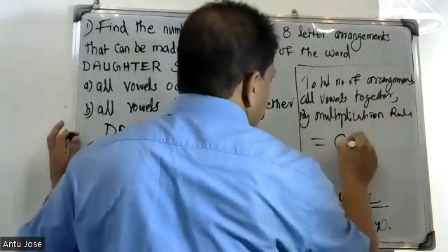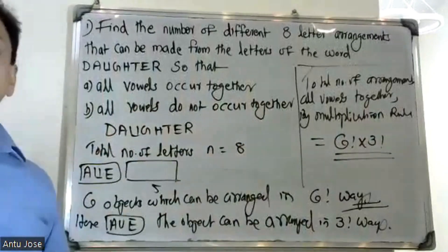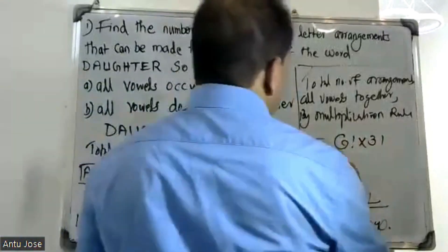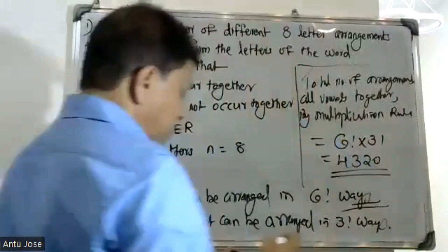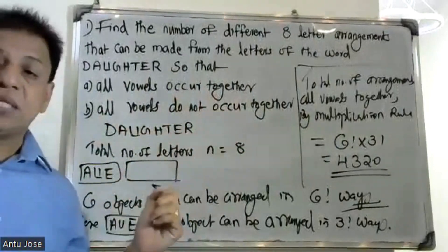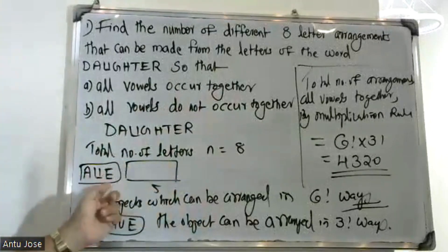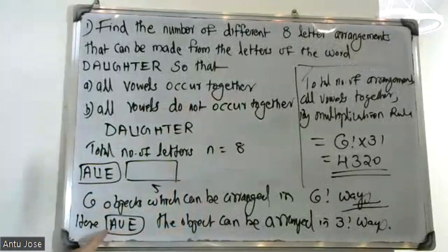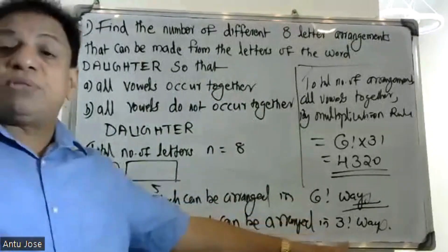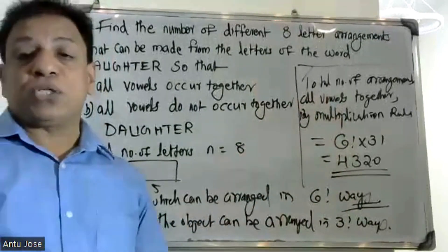The total number of arrangements with all vowels together equals 6 factorial multiplied by 3 factorial, which is equal to 720 multiplied by 6, giving 4,320. So all vowels occurring together gives 4,320 arrangements.